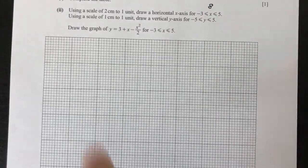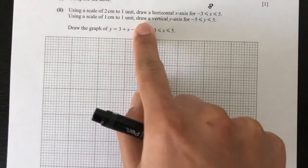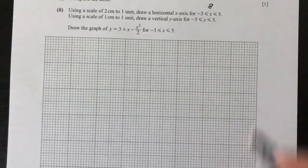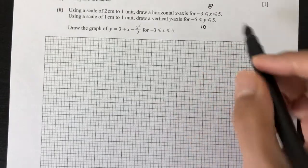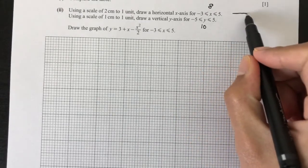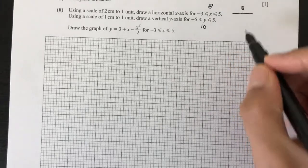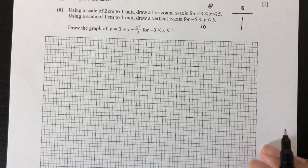Next one, using a scale of 1 centimeter to 1 unit, draw a vertical y-axis from -5 to 5. So we have 10 units. So as you can see, on the horizontal, we have 8 units to mark. And on the vertical, we have 10 units to mark.